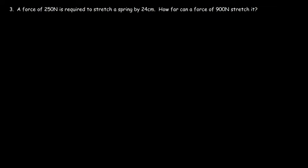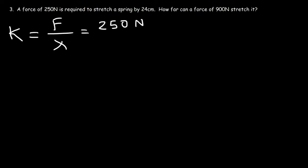Now let's move on to number 3. A force of 250 newtons is required to stretch a spring by 24 centimeters. How far can a force of 900 newtons stretch it? We can find the spring constant k, or use a ratio equation. The first method is to calculate k as the force divided by the distance: 250 newtons divided by 0.24 meters, which gives a spring constant of approximately 1041.7 newtons per meter.